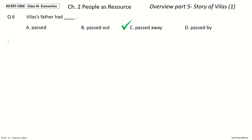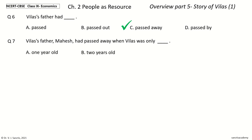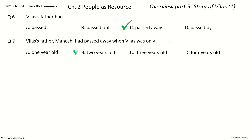Question 7: Vilas's father Mahesh had passed away when Vilas was only dash. The options are: a) 1 year old, b) 2 years old, c) 3 years old, d) 4 years old. And the answer is 2 years old. So Vilas's father Mahesh had passed away when Vilas was only 2 years old.